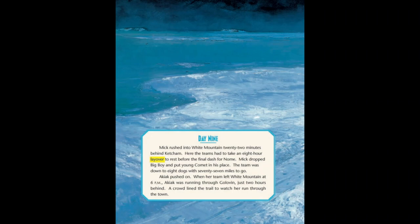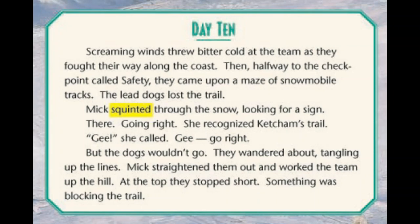A crowd lined the trail to watch her run through the town. Day 10. Then, screaming winds threw bitter cold at the team as they fought their way along the coast. Halfway to the checkpoint called Safety, they came upon a maze of snowmobile tracks. The lead dogs lost the trail. Mick squinted — and squinted is just when you make your eyes really small to try and see better. Mick squinted through the snow, looking for a sign. There! Going right! She recognized Ketchum's trail. 'Gee!' she called. 'Gee! Go right!' But the dogs wouldn't go. They wandered about, tangling up the lines. Mick straightened them out and worked the team up the hill. At the top, they stopped short. Something was blocking the trail.